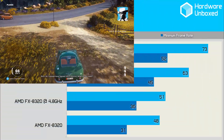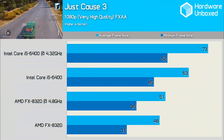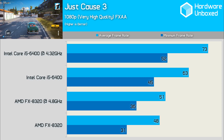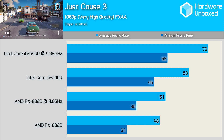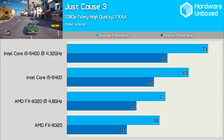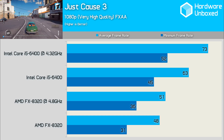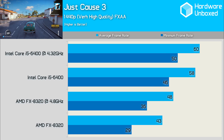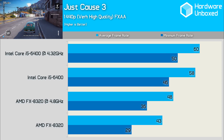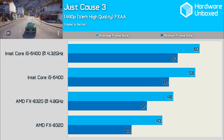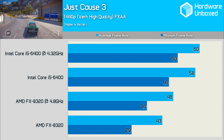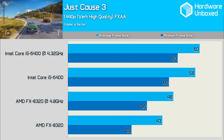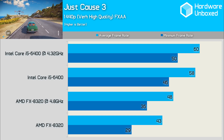Just Cause 3 is another very CPU-intensive video game, and as such the FX8320 really suffers. At 1080p, the overclocked FX8320 was good for just 51fps on average with a 36fps minimum, while the 6400 never dropped below 45fps, allowing for a 63fps average. Increasing the resolution to 1440p had little impact on the FX8320's performance since we were already CPU-limited at 1080p. The Core i5-6400 became noticeably slower at 1440p, but was still a great deal faster than the FX processor.